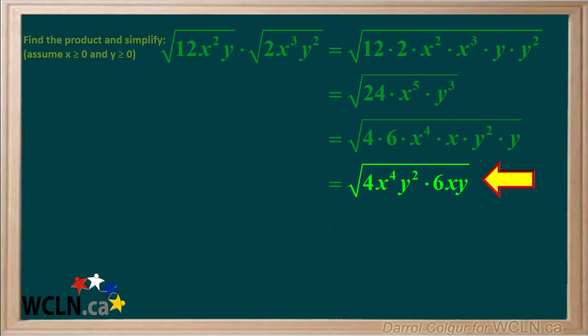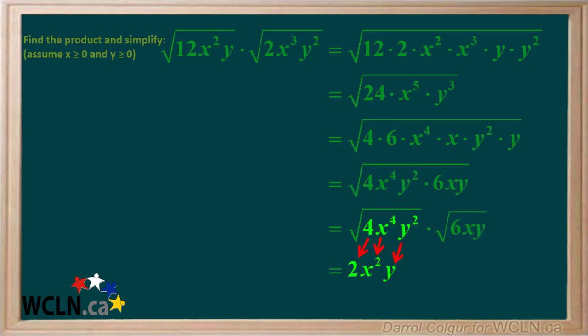Now we have this expression. We'll split it up into two separate square roots — the square root of the perfect squares and the square root of the leftovers. The square root of 4 is 2, the square root of x to the 4th is x squared, and the square root of y squared is y. The square root of 6xy cannot be simplified, so we just bring it down. So the final answer is 2x squared y times the square root of 6xy.